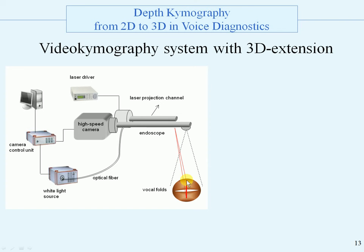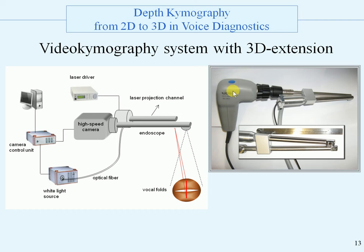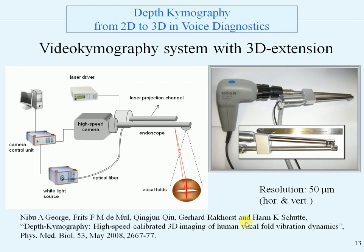Here is the camera control unit and the computer. This is an overview of the equipment. Here is the 2D kymography system and here is the 3D extension, seen from the bottom. This is the exit of the laser line, and here is the exit for the 2D system. The resolution is 50 microns, and the details are written down in this article.